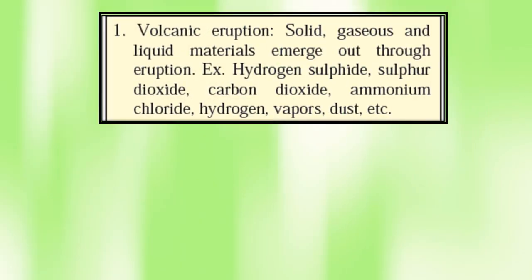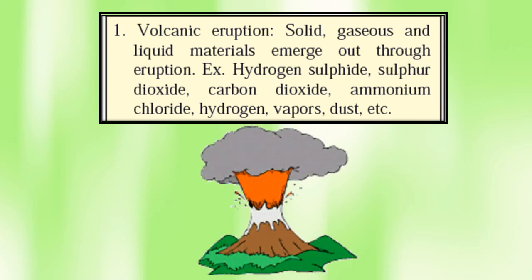Number one, volcanic eruption. Solid, gaseous, and liquid materials emerge through eruption — for example, hydrogen sulfide, sulfur dioxide, carbon dioxide, ammonium chloride, hydrogen vapors, dust, etc. When a volcanic eruption occurs, all these poisonous gases come out and lead to air pollution.